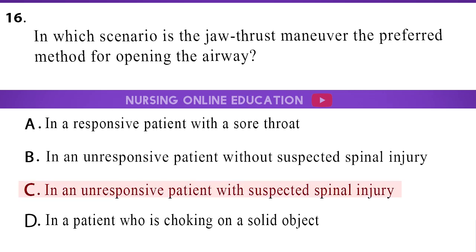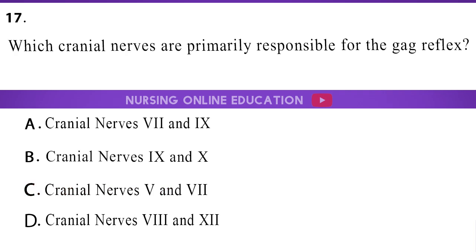The answer is option C: In an unresponsive patient with suspected spinal injury. Which cranial nerves are primarily responsible for the gag reflex? A. Cranial nerves 7 and 9. B. Cranial nerves 9 and X. C. Cranial nerves V and 7. D. Cranial nerves 8 and 12.